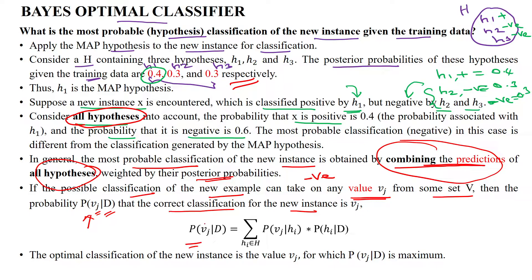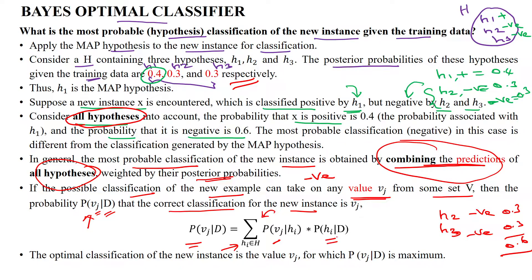The probability of Vj given data D can be calculated by summing over all hypotheses in the hypothesis space. We sum over H2 and H3 which belong to the negative class — 0.3 and 0.3 — giving 0.6. The formula is: sum over Hi of P(Vj | Hi) multiplied by P(Hi | D). This gives the optimal classification for new test data given to the model, and it should be maximized.